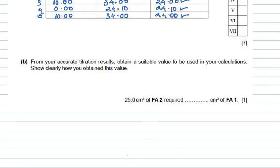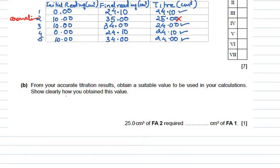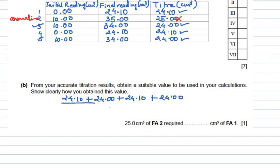The question then asks: from your accurate titration results, obtain a suitable value to be used in your calculation and show clearly how you obtained it. Take the ticked readings — 24.10, 24.00, 24.10, and 24.00 — and calculate their mean. The mean is 24.05 cm³ of FA1, which was required to titrate with 25 cm³ of FA2.